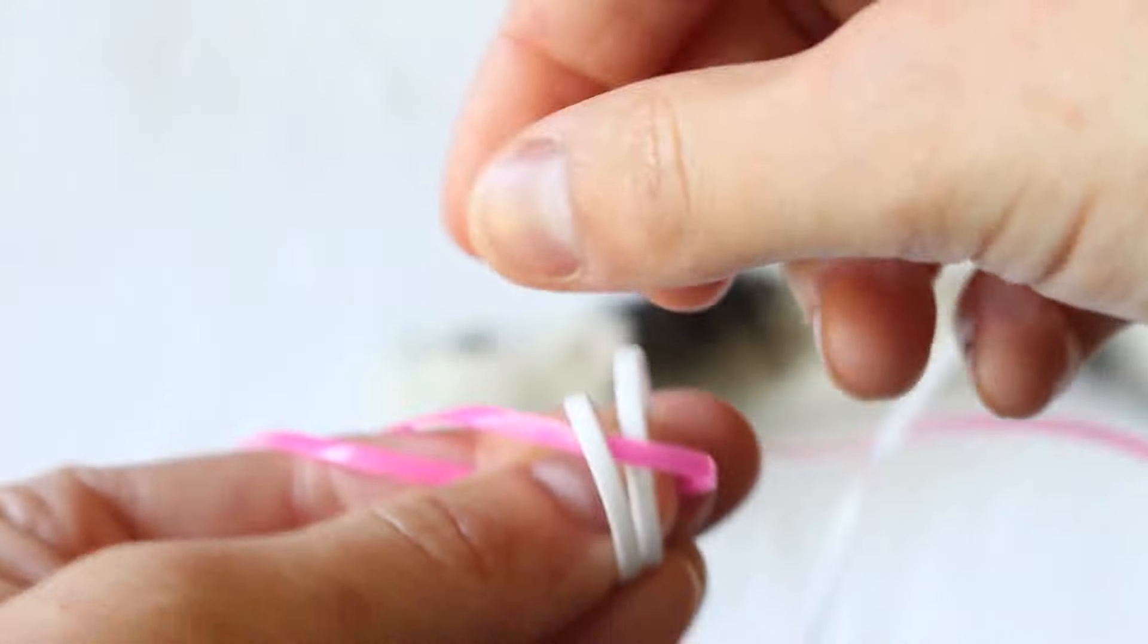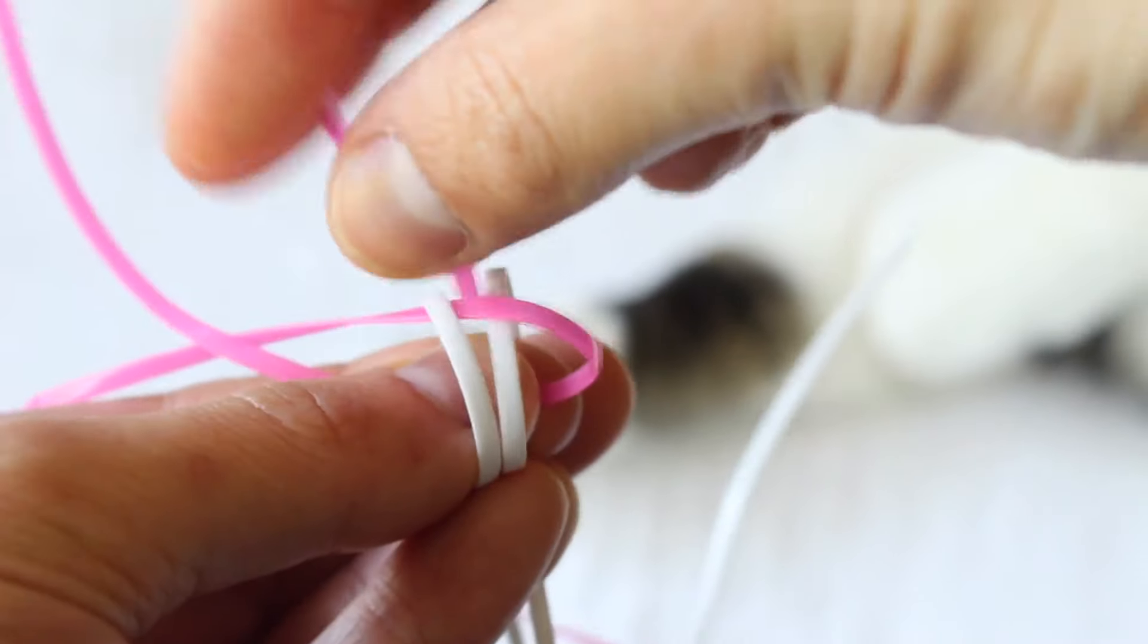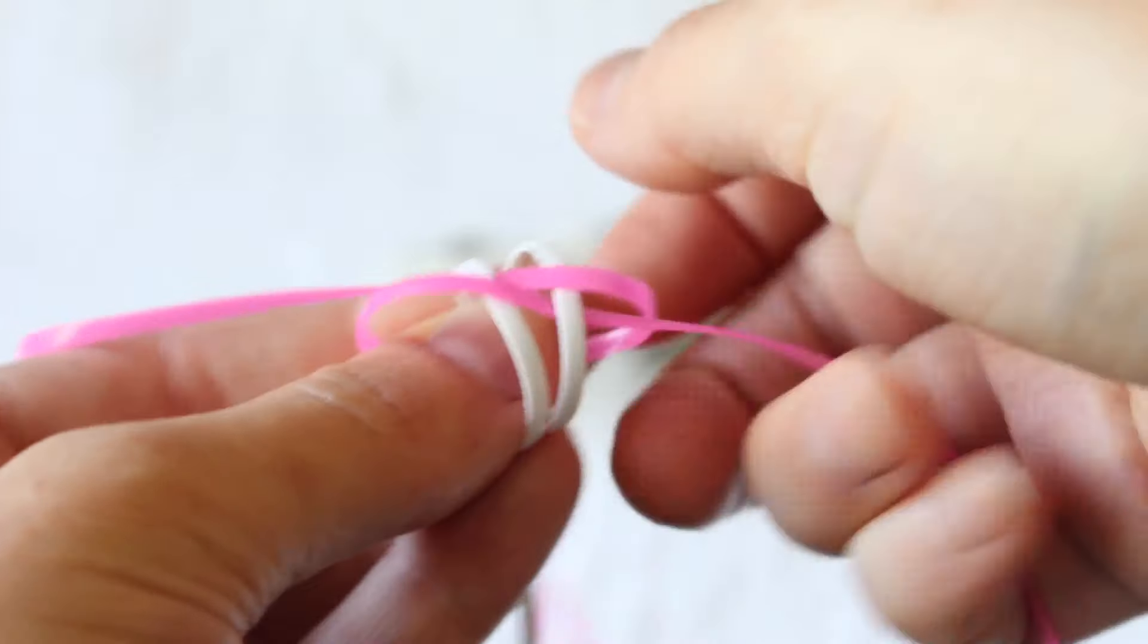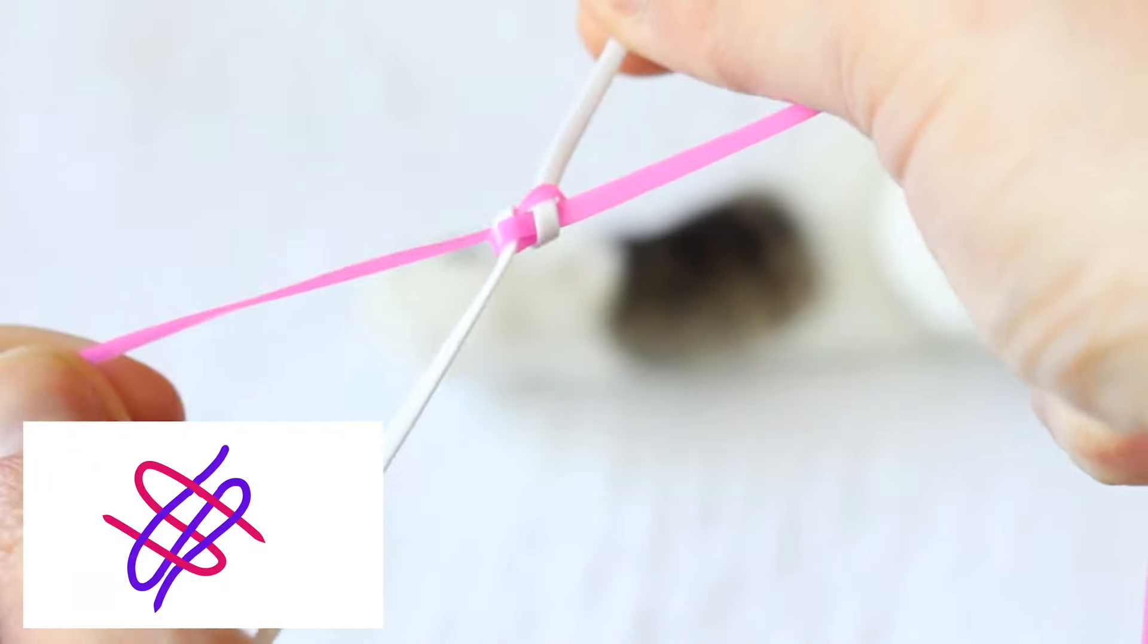I'm taking this pink string that's on the right and I'm going over that loose string, under the loop. And then I'm taking the string that's on the left and I'm going over the loose string and under the loop. Like so, and I'm pulling them all together.